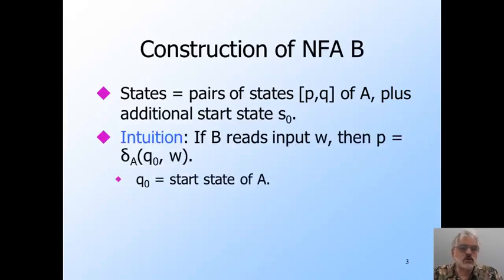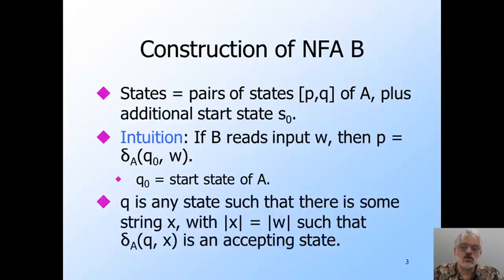Here's what we intend to be true whenever B can be in state PQ after reading the input W. Now remember, B is non-deterministic, so it can be in many such states at once. But first of all, the first state of the pair P is the state that A enters after reading input W. So although B can be in several different states after reading W, they all have the same first component, and B simulates A using the first component of A's state. The second component Q is a state such that A can go from that state Q to an accepting state of A while reading some input X whose length is the same as that of W. B will be in all states PQ such that Q satisfies the condition I just set.